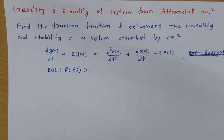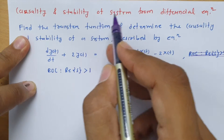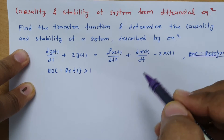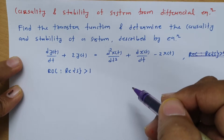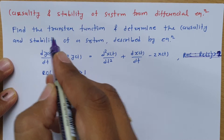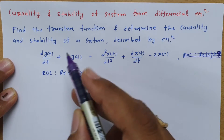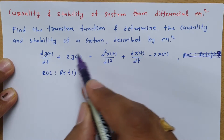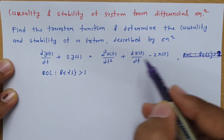Welcome to the Signal and Systems lecture series. In this session, I will explain causality and stability of a system from a differential equation. The question is: find the transfer function and determine the causality and stability of the system described by the given differential equation.